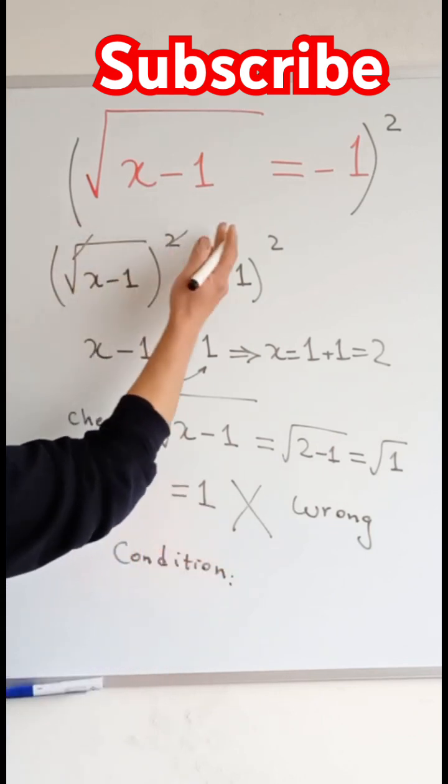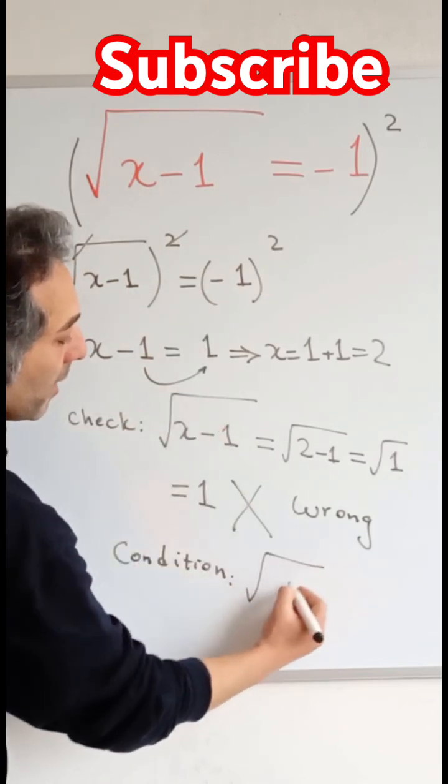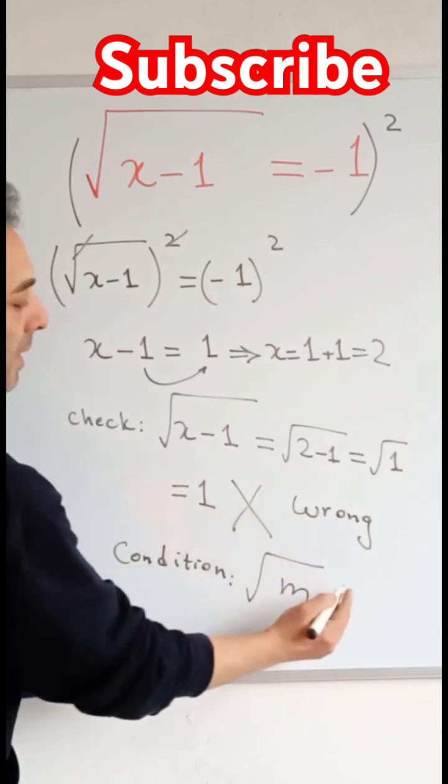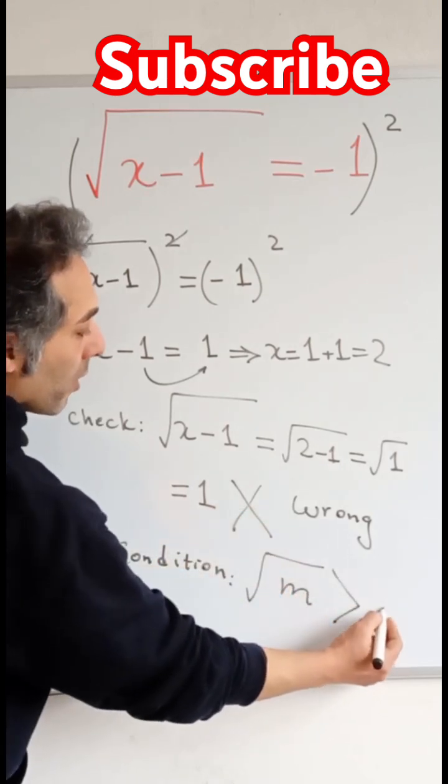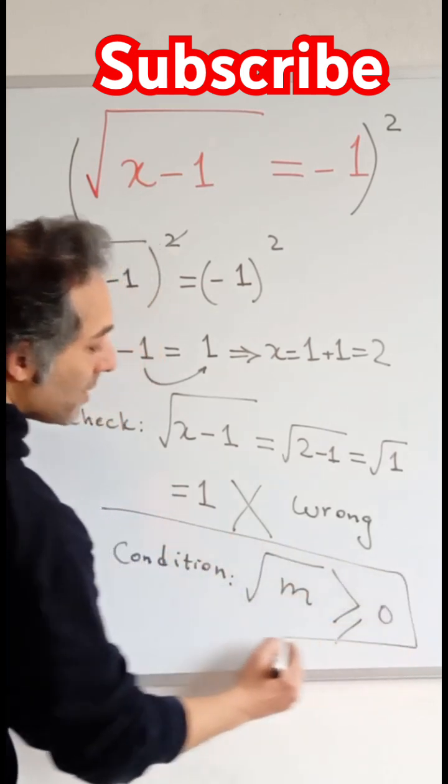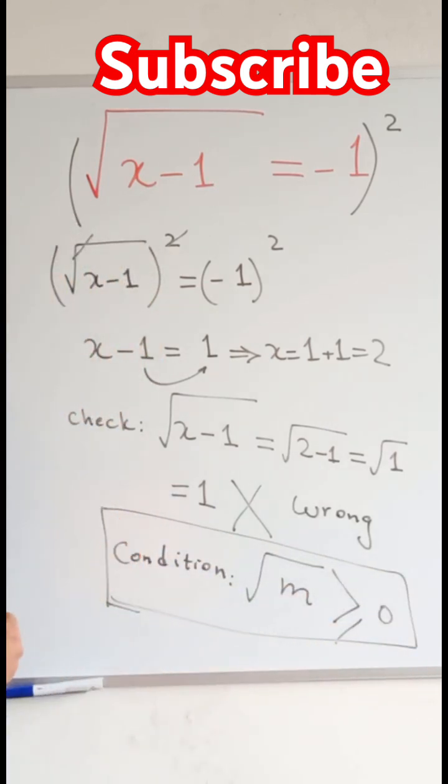you have a square root term like square root of m, this must be greater than or equal to 0. And you can see here the result is minus 1, which is negative. So if you don't satisfy the condition or your equation